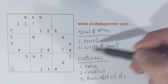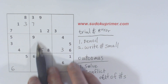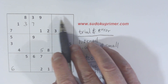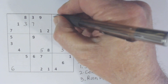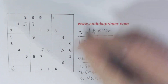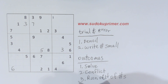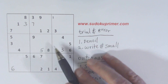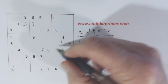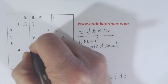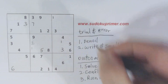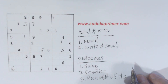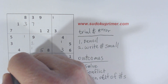Let's try another trial and error. One of these two is a one, so I'm going to say let's try that one. And with that one, let's fill in as much as we can. A one goes there. Now with our one-two twins there, we can solve them. And that's a one there, and we got a one there.